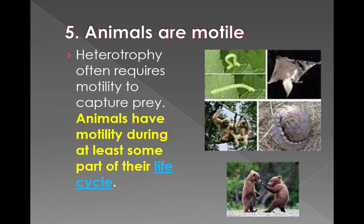The fifth characteristic is they are motile. In order to be heterotrophs they have to be able to move about to capture prey, so animals are mobile at some point during their life cycle.